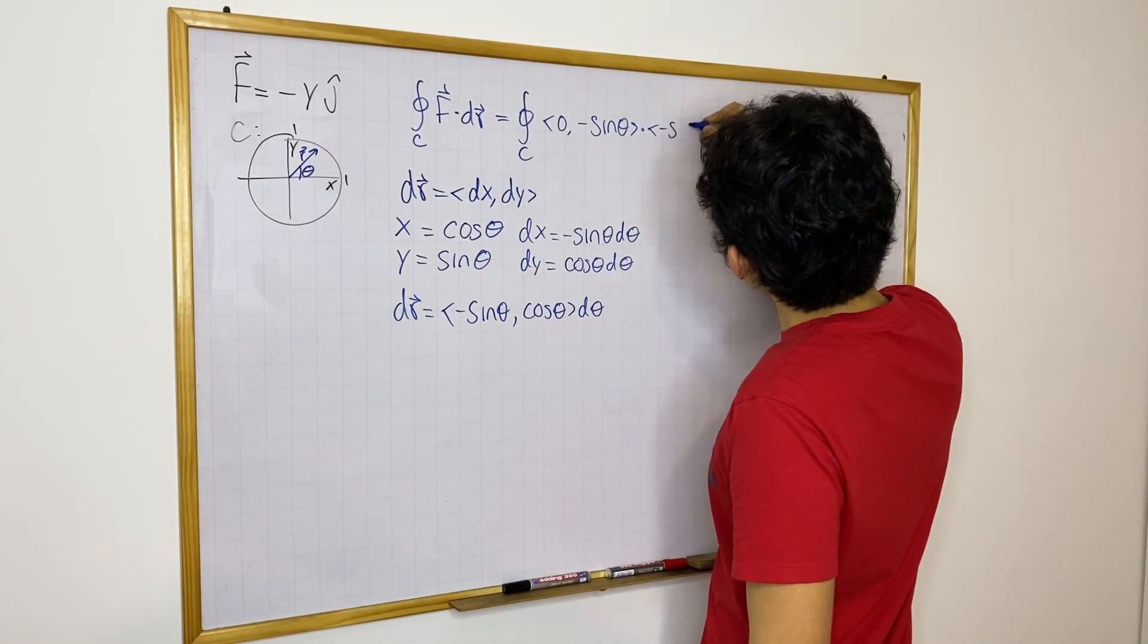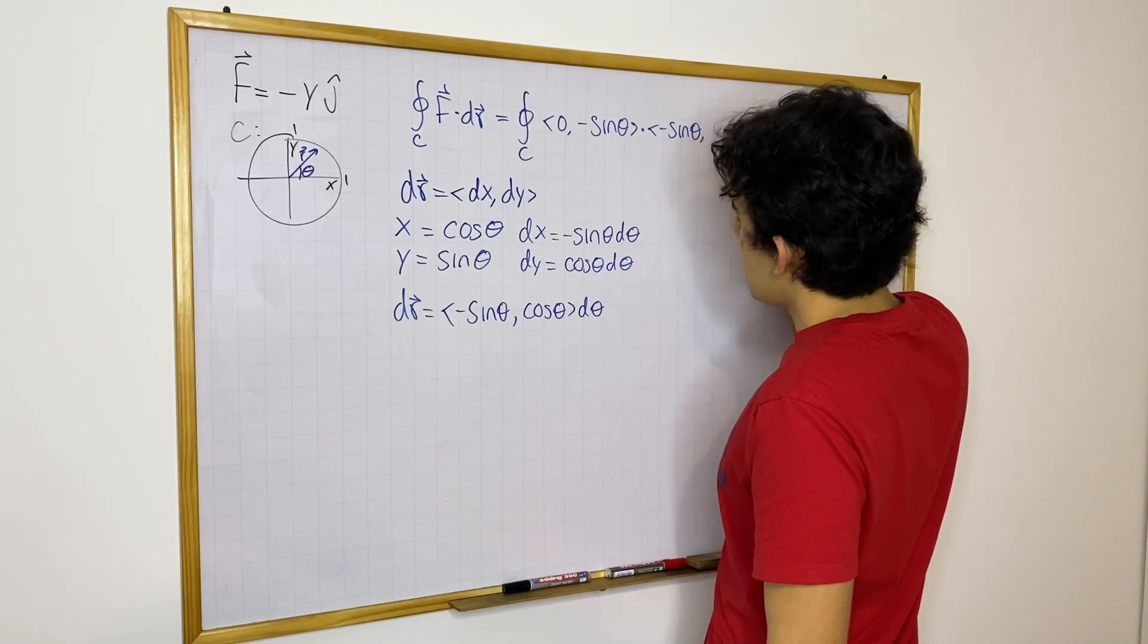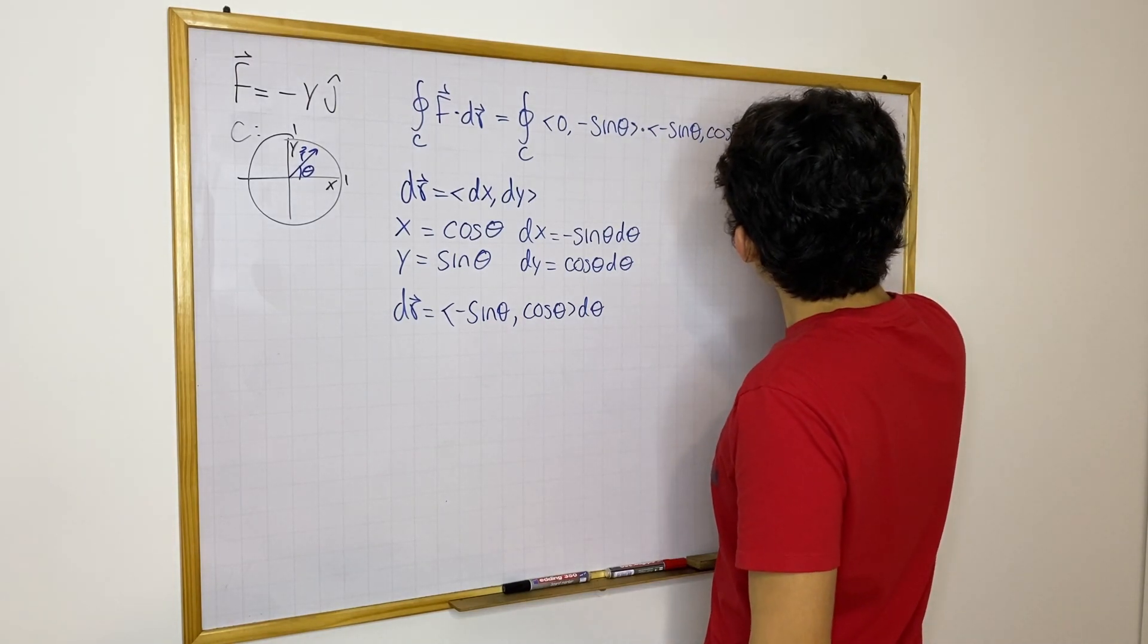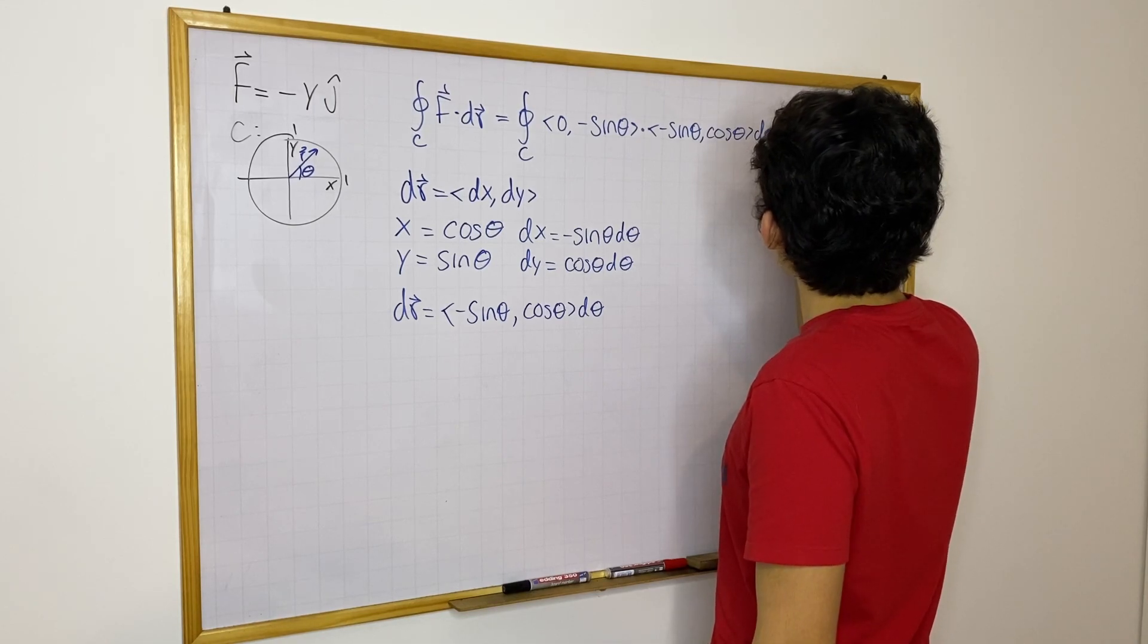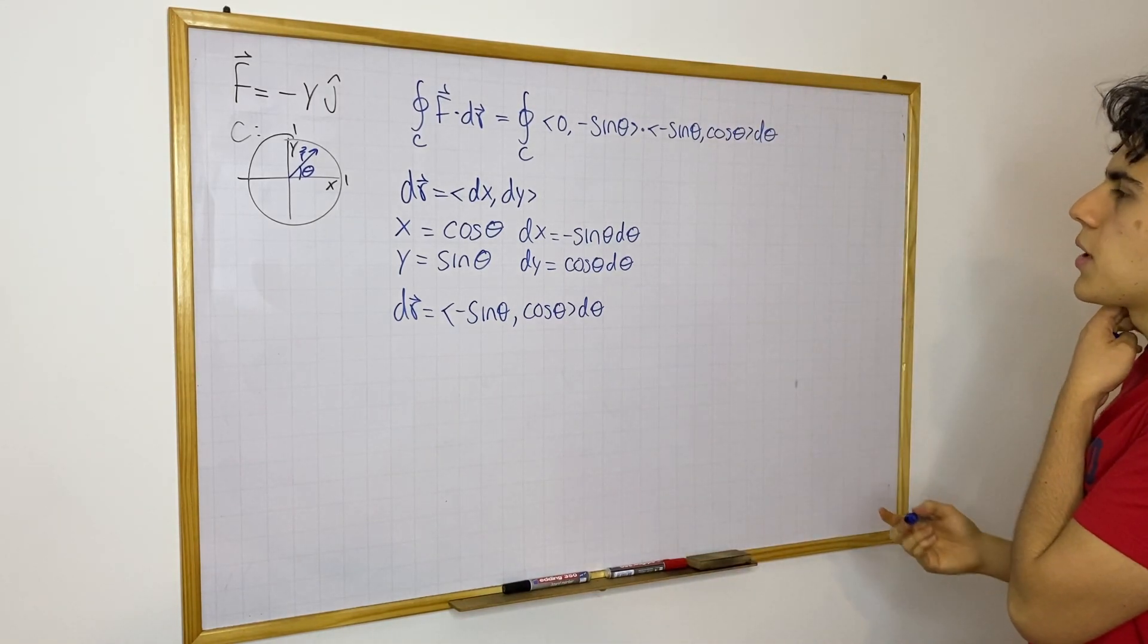which is this, minus sine theta cosine theta. I'll close this, d theta. Okay. And this is what we have.